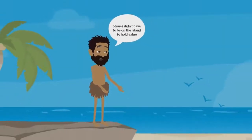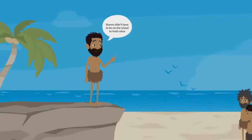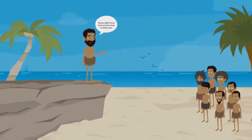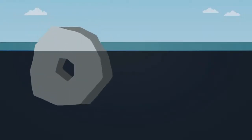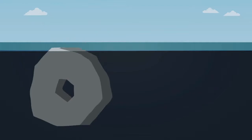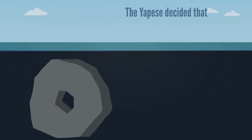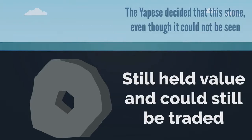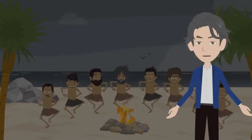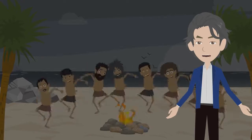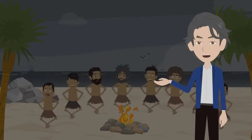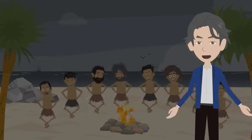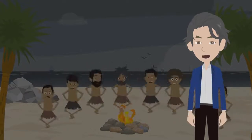The tribe also decided that stones didn't have to be on the island to hold value. One day, a stone fell into the ocean, and the Yapese decided that this stone, even though it could not be seen, still held value and could still be traded. This system of consensus by the majority of the adults on the island, with no central administrator, is one of the first examples of a distributed ledger.